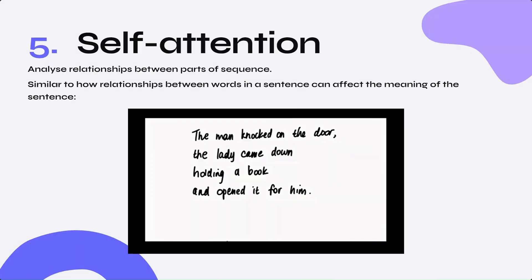The fifth step is self-attention, or relationship encoding. This involves analyzing relationships between parts of a sequence, similar to how relationships between words in a sentence affect its meaning. For example: 'The man knocked on the door, the lady came down holding a book, and opened it for him.' The word 'it' refers to the door, but it's not made clear whether it refers to the book or the door. The relationship between 'it' and 'door' is essential to the sentence's meaning. Similarly, relationship encoding identifies patterns and dependencies amongst digits representing the time series.